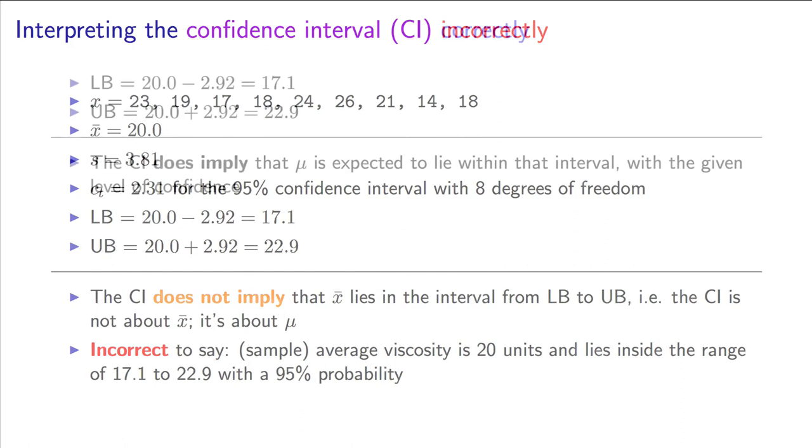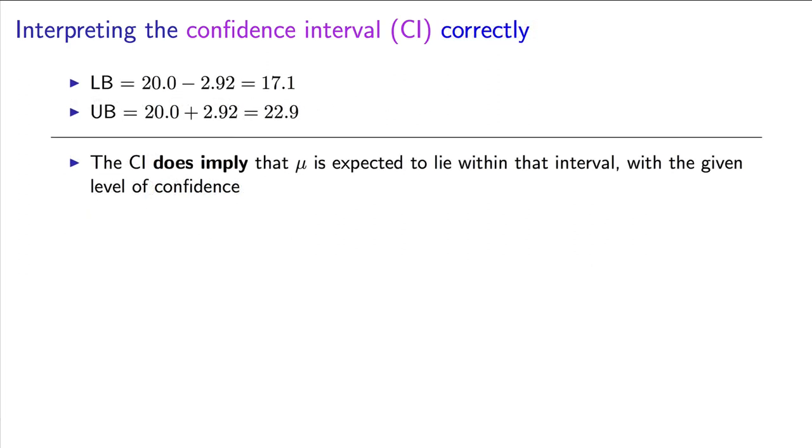Rather, let us look at how the confidence interval should be used. It implies the population parameter mu lies within that interval with a given level of confidence. The confidence interval is a range of values for the parameter.